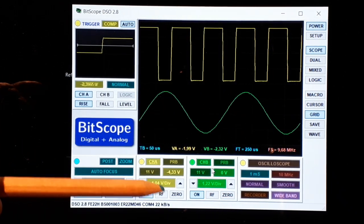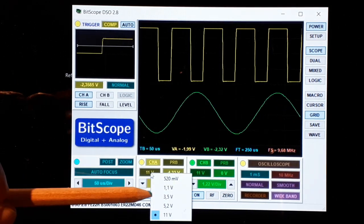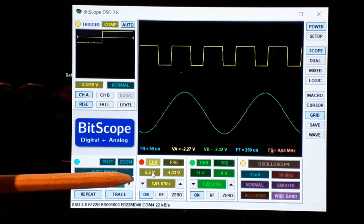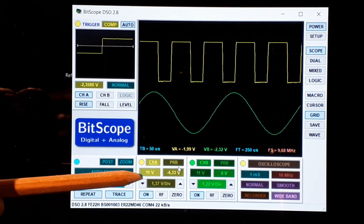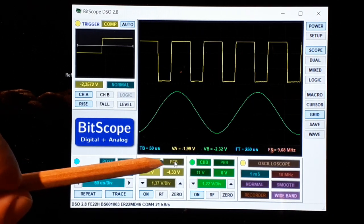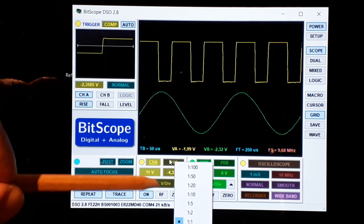Here also we could change the voltage range, the input voltage range. And we could change in case you are going to use a probe, so we have attenuation, you could change it here with the right button of the mouse.